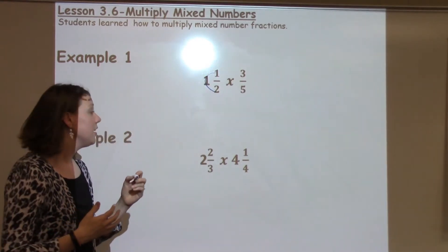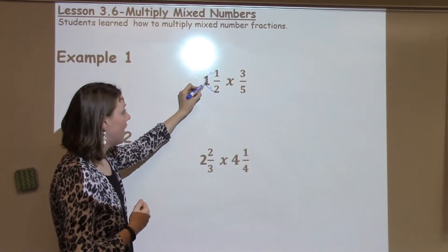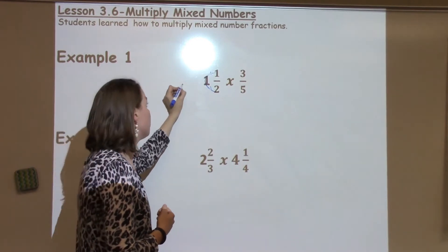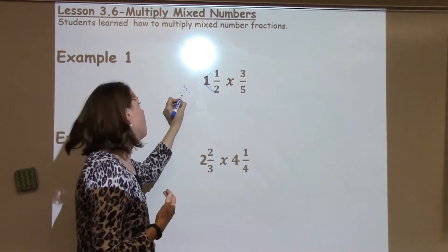But what you basically need to know is you need to multiply, then add. So I'm going to take 2 times 1, which is 2, plus one more is 3, and I put that over the denominator, which stays the same, which is 2.